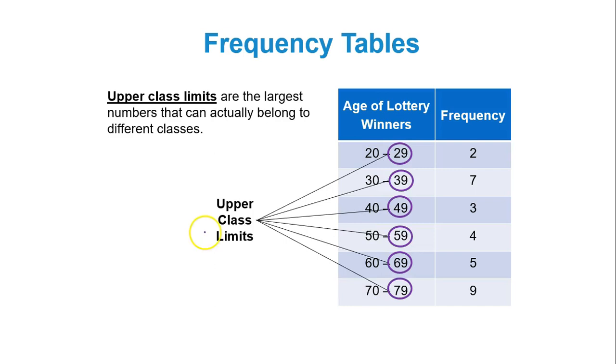In contrast, the upper class limits are the largest numbers that can actually possibly belong to each of the classes. So 29, 39, 49, 59, 69, 79, these right hand numbers, those are called the upper class limits.